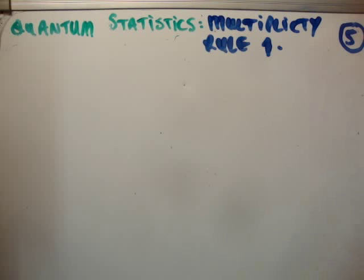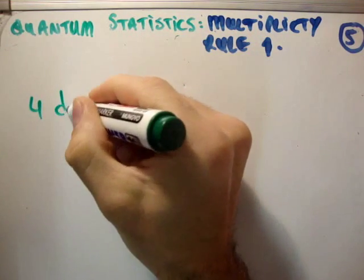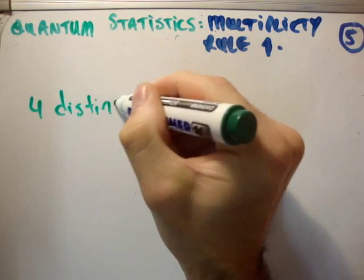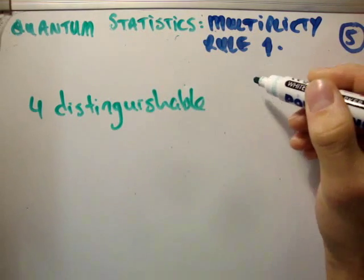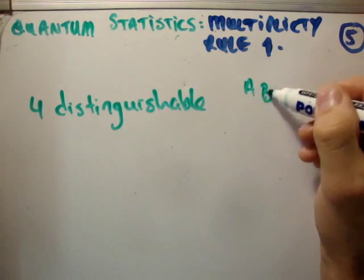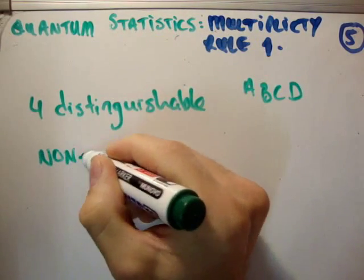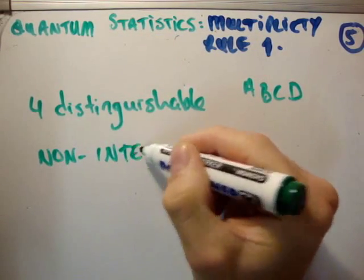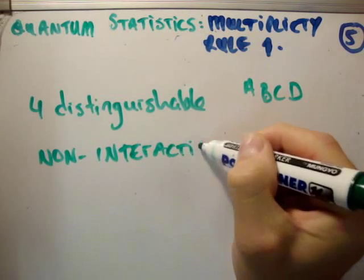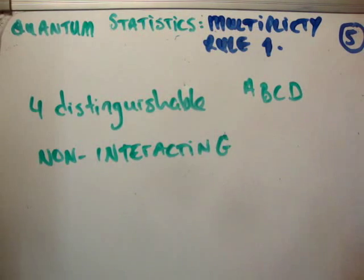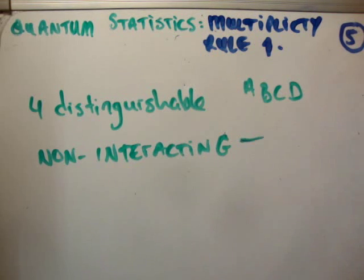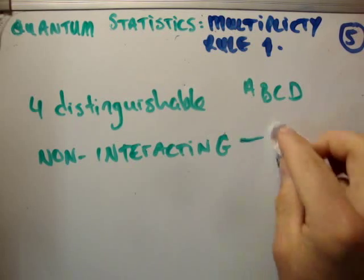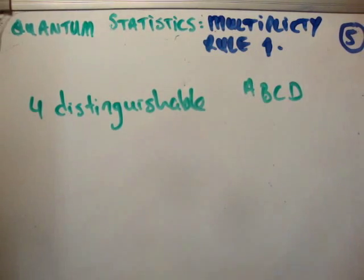So let's say we have four distinguishable particles, namely A, B, C, and D. Let's say that they are interacting particles.